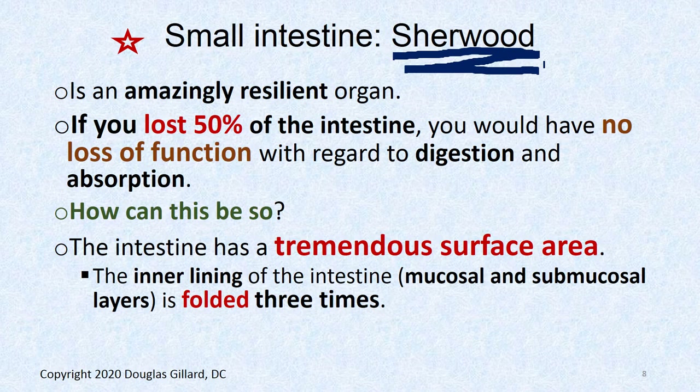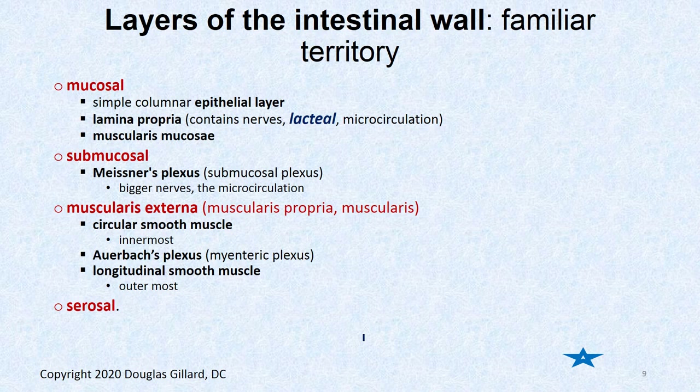The small intestine is an amazing, resilient organ. You can have cancer and lose 50% of your intestine with no loss of digestion or absorption. How can this be? Because the small bowel has a tremendous surface area, and it's got three folds. We'll get to those in a moment — first let's look at a little histology.